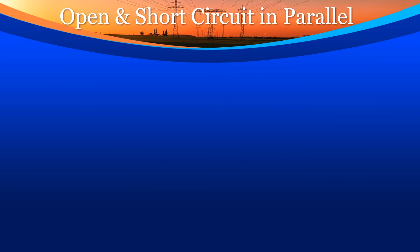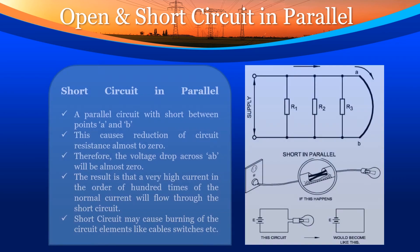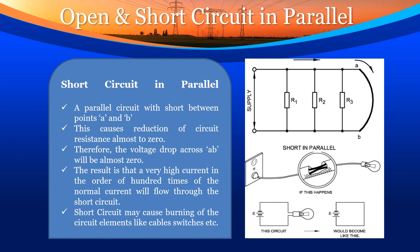Open and short circuit in parallel. Short circuit in parallel: a parallel circuit short between points A and B causes a reduction of circuit resistance almost to zero. Therefore, the voltage drop across A and B will be almost zero. As a result, a very high current — in the order of 100 times the normal current — will flow through the short circuit. Short circuit may cause burning of circuit elements like cables and switches.